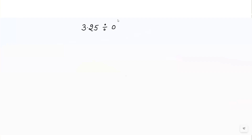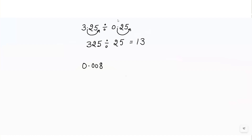25 threes are 75, so the answer for 3.25 ÷ 2.5 is 1.3. Similarly, for 3.25 divided by 0.25, I shift the point after two digits in the divisor, and also after two digits in the dividend, giving 325 divided by 25. If you divide, you get the answer equal to 13.